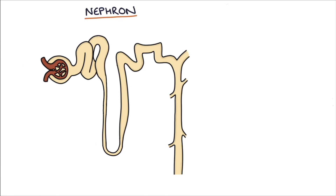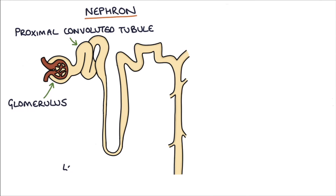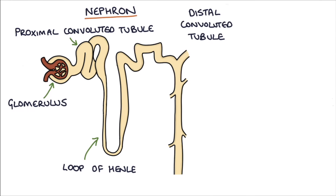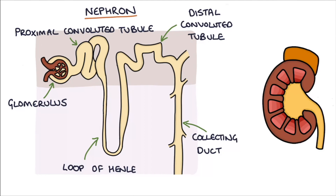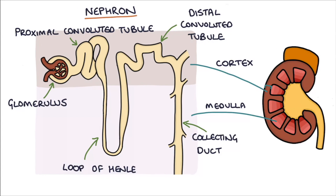The nephron consists of five main landmarks: the glomerulus, the proximal convoluted tubule, the loop of Henle, the distal convoluted tubule, and the collecting duct. The glomerulus and the convoluted tubules are up in the cortex of the kidney, and the loop of Henle and the collecting duct pass down into the medulla of the kidney.